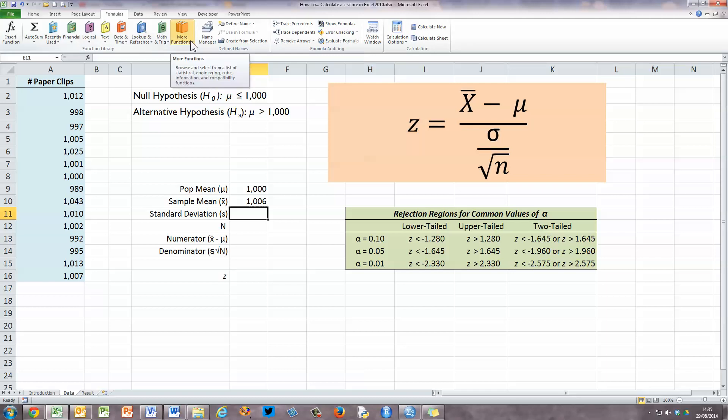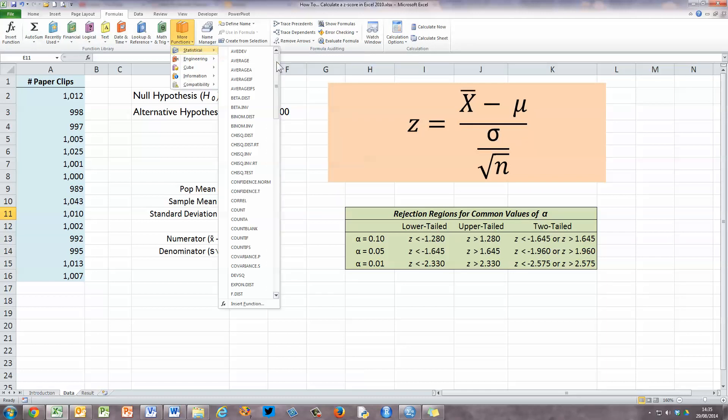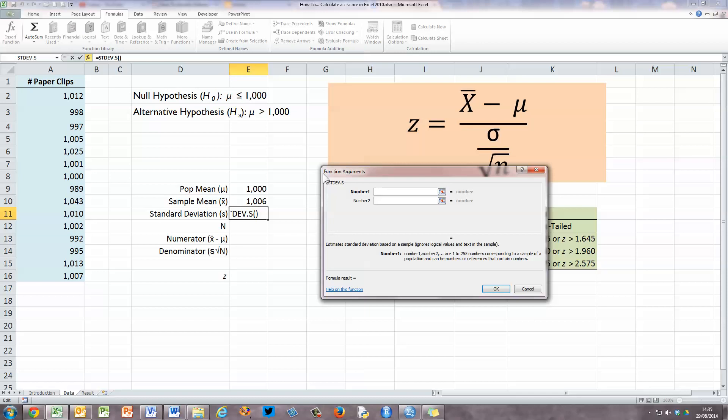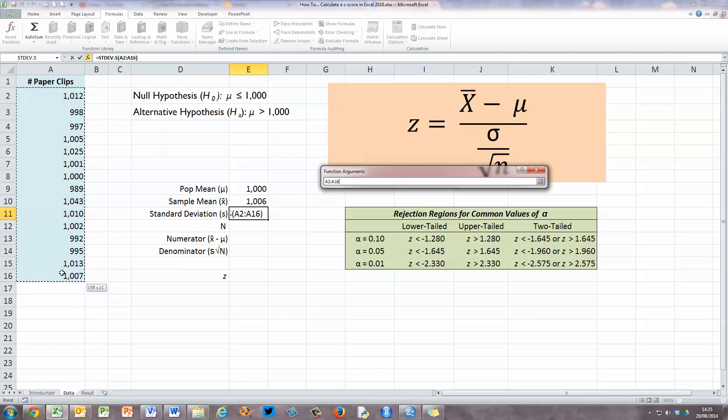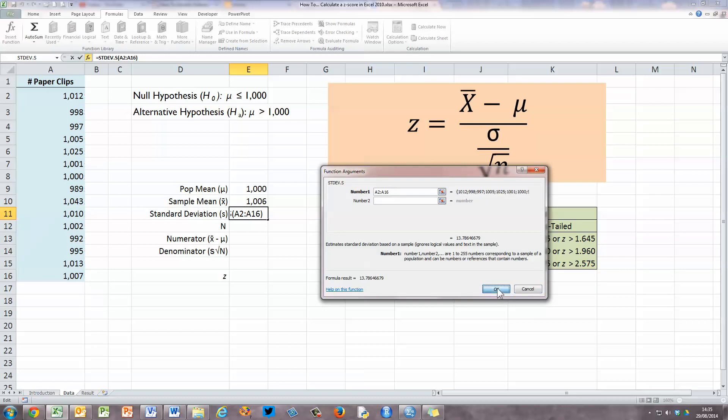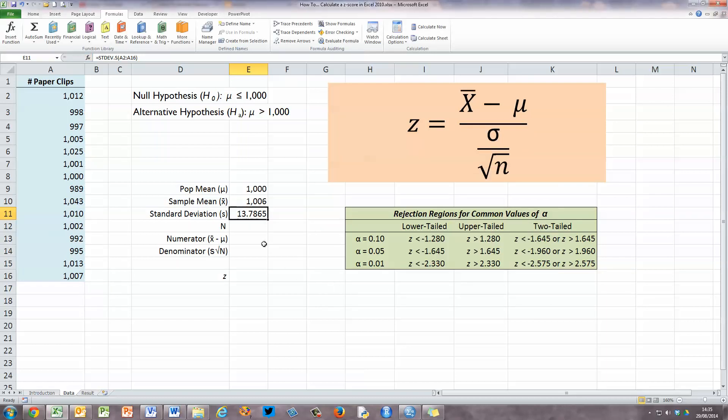I'm going to use Excel's formula ribbon, click on more functions. It's a statistical function, and I'm going to scroll down here until I get to the S's, where there is standard deviation options. There's two options here: STDEV.P, which is the standard deviation for the population, and STDEV.S, which is the standard deviation for the sample. So we're looking for the sample, so that's the one I select. So I'll click on that. And in my function arguments window over here, I'm going to select my values in column A again for my sample standard deviation, and click OK. So we can see the standard deviation of the sample is 13.7865, and we're going to use this in our formula in place of the population standard deviation.